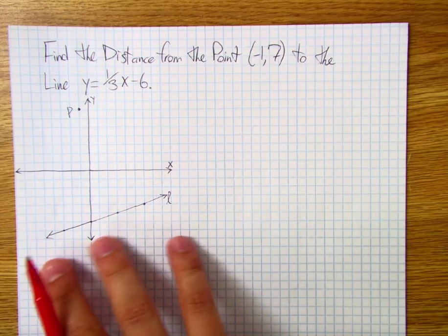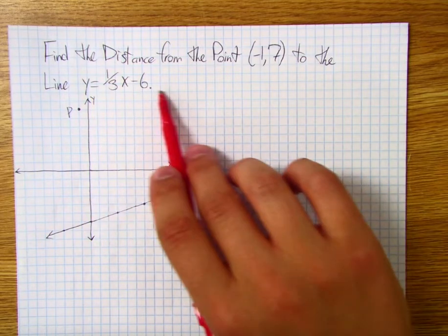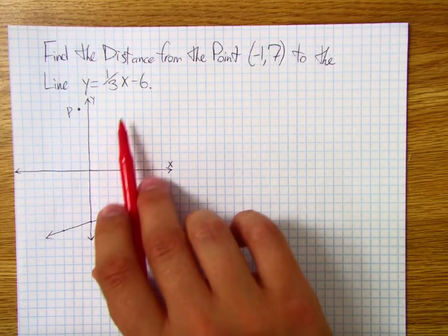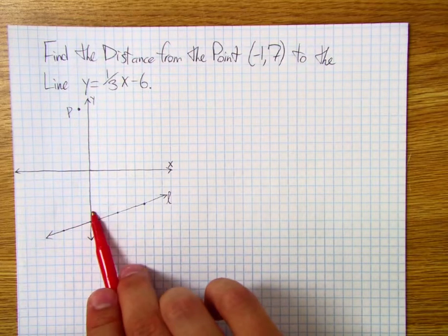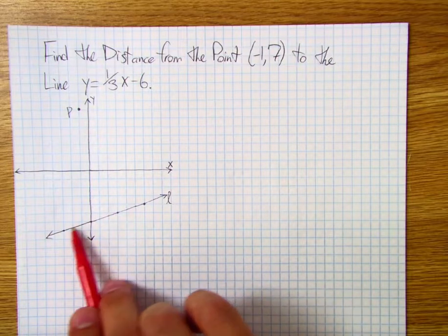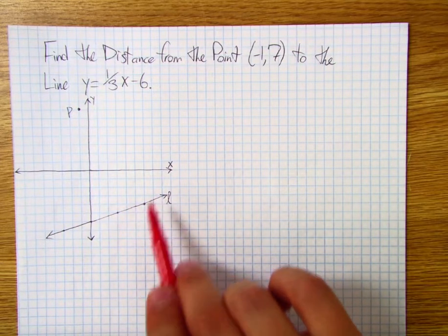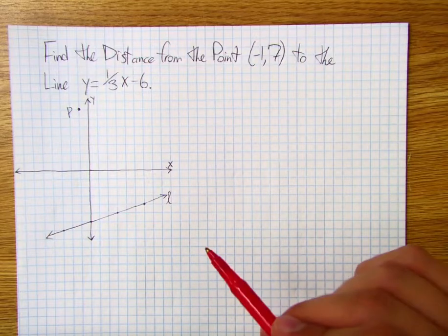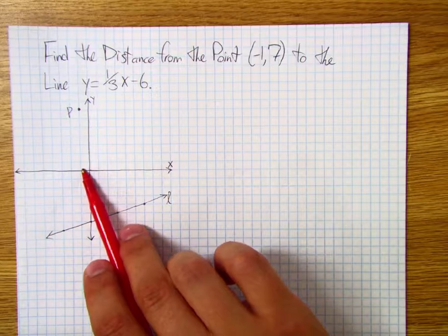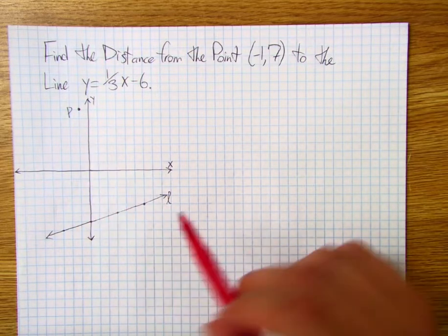So I went ahead and graphed the line y is equal to 1 third x minus 6. We've got our y-intercept of negative 6. You'll notice we are down 6. And we have our slope of 1 third. So that's our rise of 1 and our run of 3. And this is how we've created this linear equation, and we've just called that line L. Separately, we've got the point negative 1, 7, so I went ahead and plotted a point left 1 and up 7 units.